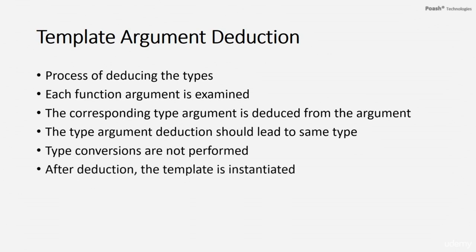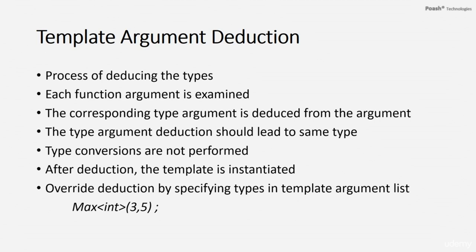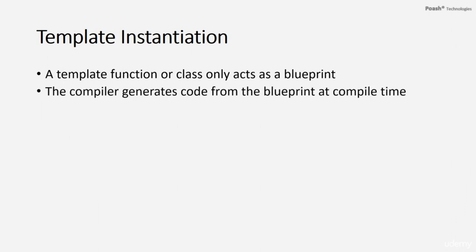After the deduction process is over successfully, the template is instantiated. Sometimes we may need to override the deduction process of the compiler, and we can do that by specifying the types in the template argument list. A template function or class will only act as a blueprint. This blueprint is used by the compiler to generate the code after template argument deduction. This process is known as template instantiation and happens at compilation time.